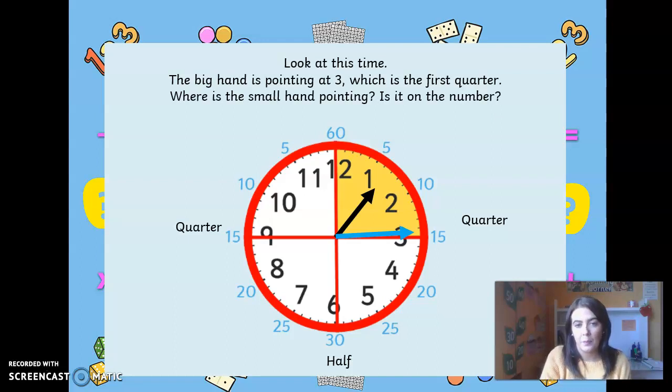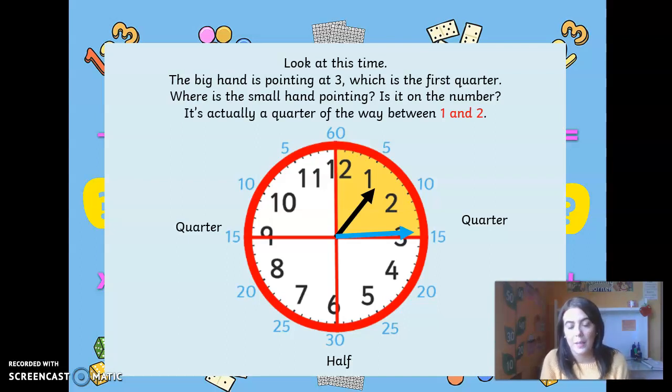Where is the small hand pointing? Is it on a number? It's actually a quarter of the way between one and two. So can you see that there? It's between one and two.